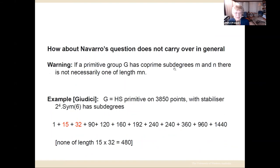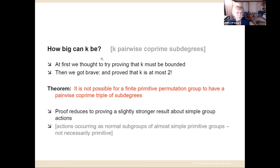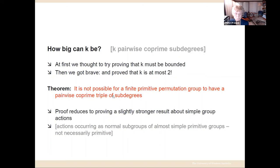How big can the parameter k be? At first we discussed whether k could perhaps be 10 or 20. But Pablo insisted — based on his experiments — that k could not be bigger than two, and he persuaded us to try really hard to prove this. Our last theorem proves exactly that: it is not possible for a finite primitive permutation group to have even three pairwise co-prime sub-degrees. Again, this proof reduces to a slightly stronger result about actions of finite simple groups, and it depends on the classification of finite simple groups.